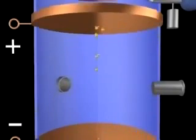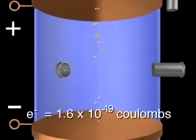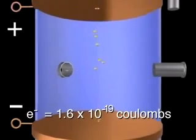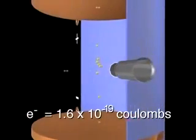Milliken was able to determine that the charges on the droplets were all multiples of a smallest value, 1.6 times 10 to the minus 19th coulombs. He took this to be the charge on a single electron.